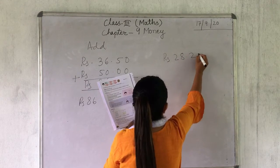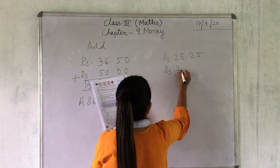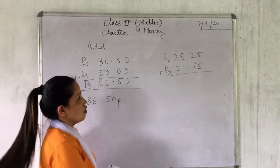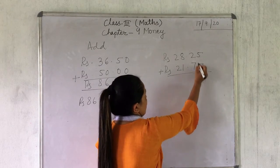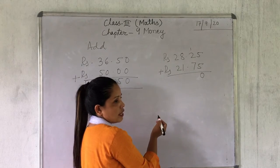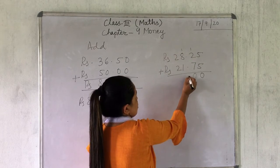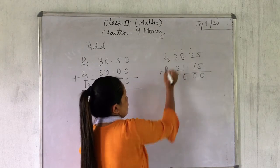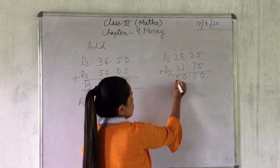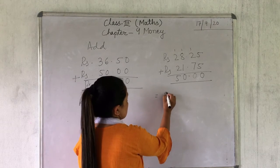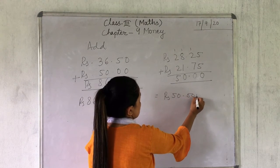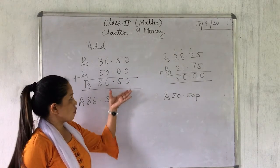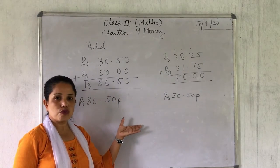Rupees 8.25 and rupees 21.75. Adding: 5 plus 5 is 10, write 0 carry 1. 7 plus 2 is 9, plus 1 carry is 10, write 0 carry 1. Then the decimal point. 8 plus 1 is 9, plus 1 carry is 10, write 0 carry 1. 2 plus 2 is 4, plus 1 is 5. So the answer is rupees 30.00. This is addition; similarly, you have to do subtraction in the same way.